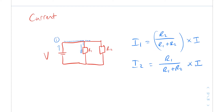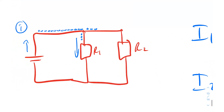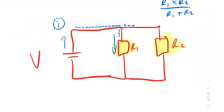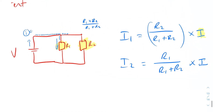To find the input current itself, combine the two parallel resistors using the product-over-sum formula: R1 times R2 divided by R1 plus R2, giving you the total resistance. Then use Ohm's law, V equals IR, to find the total current I. You can then plug that into the current divider formula.